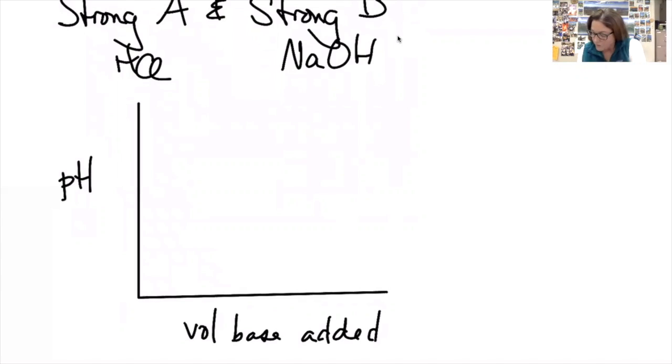So what we see on a titration curve is your starting pH is going to be nice and low, because at zero volume of base it's going to be the pH of whatever the acid is to begin with. Then it'll increase slowly at first, really rapidly, and then level off.